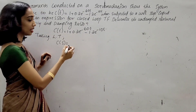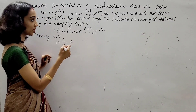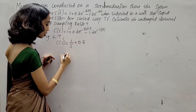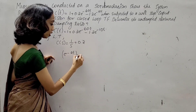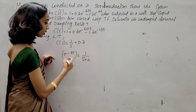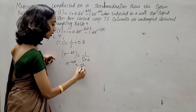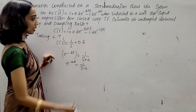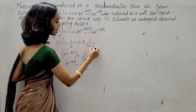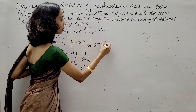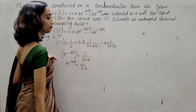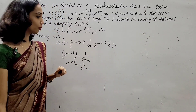Taking the Laplace transform of C(t): C(s) = 1/S + 0.2 × 1/(S + 60) − 1.2 × 1/(S + 10).